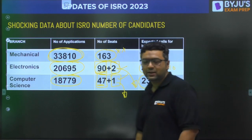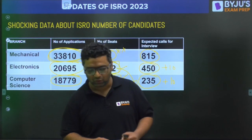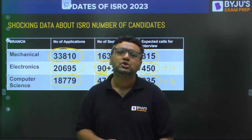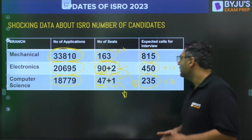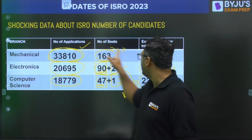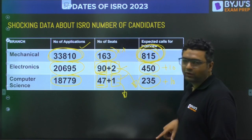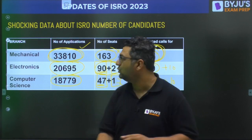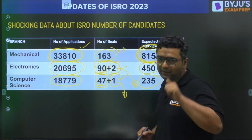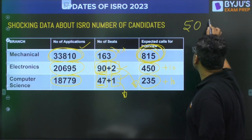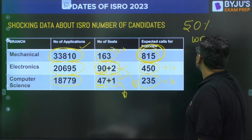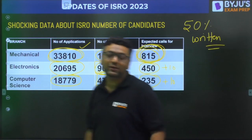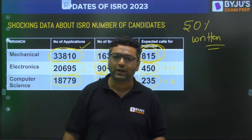This is the detail based on the RTI data. You can get an idea of the numbers you need to be within. Importantly, previously the written test had no weightage — once you were in the shortlist, everything was decided by the interview. But now, 50 percent weightage is given to the written paper. So this time, not only making the shortlist but also your written test score is very important.